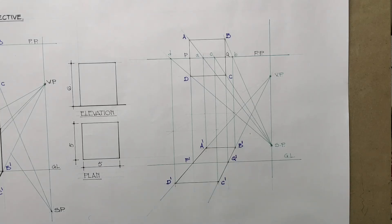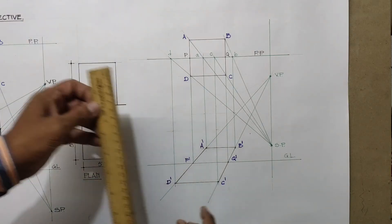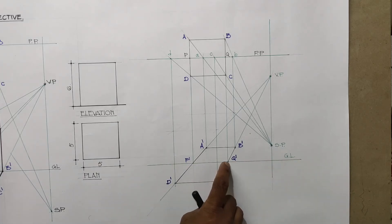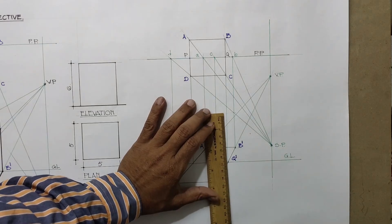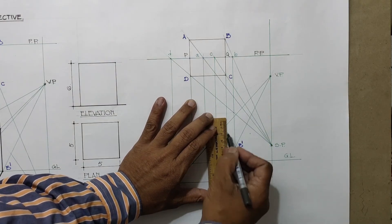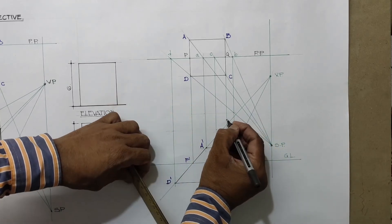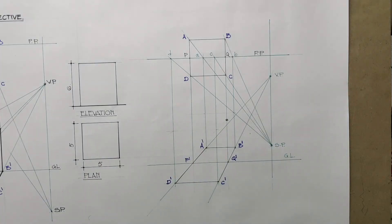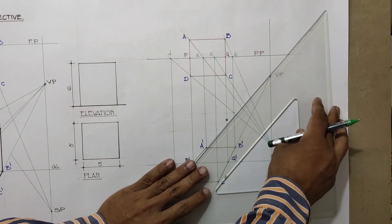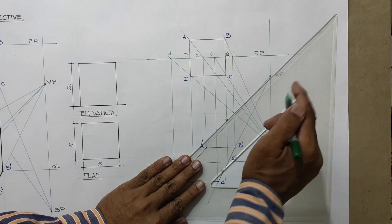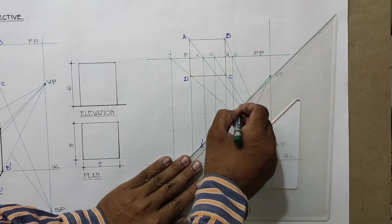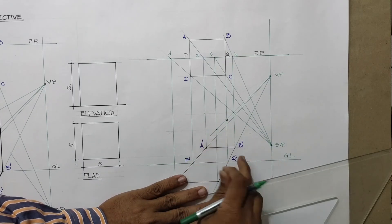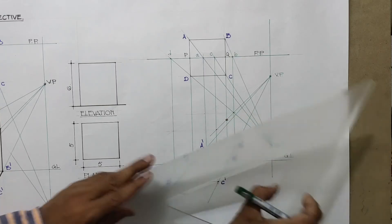Now we need to add heights. The height is given as 6 units. We always take heights from GL, so on the Q-dash line we take 6 units — this gives us the height line. From this height at 6 units, I project from the vanishing point onto A-dash and B-dash, drawing a line passing through. So somewhere here is the top of B-dash and somewhere here is the top of the wall.